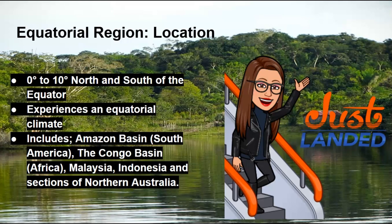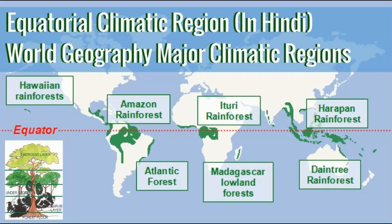All the places located 0 to 10 degrees north and south of the equator are considered to be part of the equatorial region and they experience the equatorial climate. These include places like the Amazon basin in South America, the Congo based in Africa, Malaysia, Indonesia, and some sections of northern Australia.